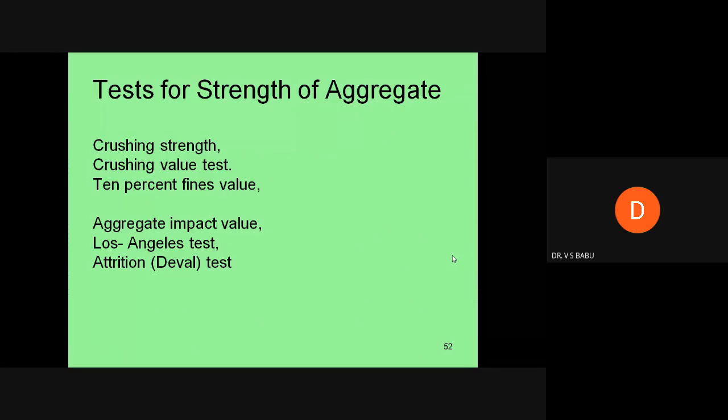Tests for aggregates include crushing value test, crushing strength test, 10% fine value test, aggregate impact test, and Los Angeles abrasion test. Generally, we test Los Angeles abrasion with 500 rpm, using 5 kg or 10 kg depending on the grade.